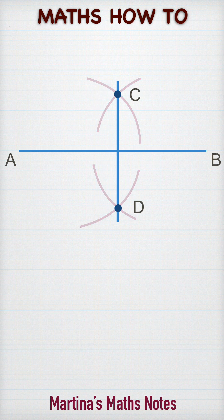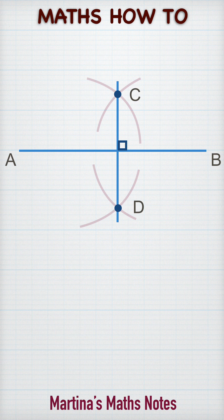The line CD is the perpendicular bisector of the line segment AB, where the point M is the midpoint of AB.